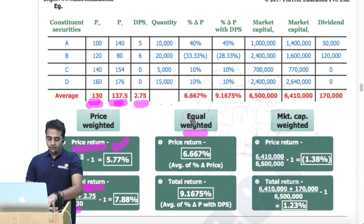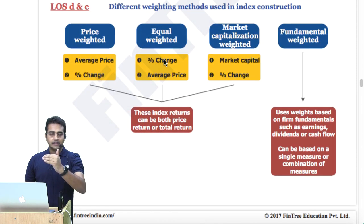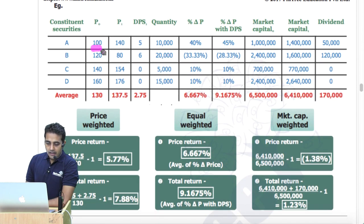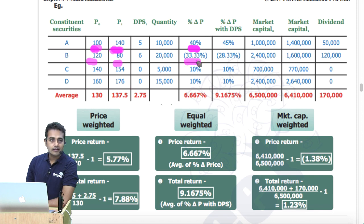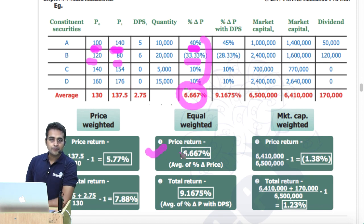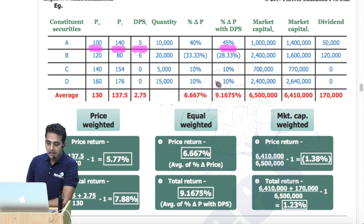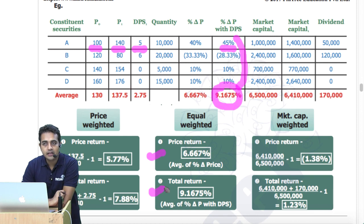For equal weighted, remember the flowchart — the sequence gets inverted. Equal weighted: we do the percentage change first, then the average. 100 became 140, that's 40%. 120 became 80, that's minus 33.33%. We calculate percentage change and then calculate the average — that's equal weighted price return. If you also consider dividends, for example 100 became 140 and received a dividend of 5, that's 45% — then average of those numbers gives equal weighted total return.